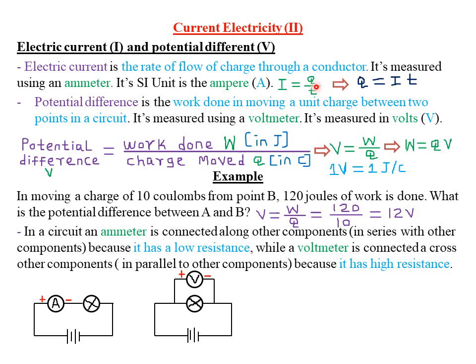From the same formula, we can deduce that charge can also be given by the product of current and the time taken for that current to flow from one point to another: Q = I × t.